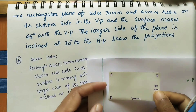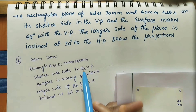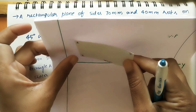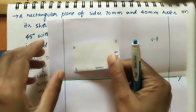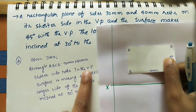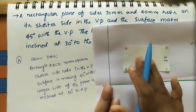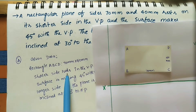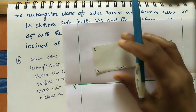Before drawing any plane, take this sentence: the shorter side rests in the VP. The plane has two shorter sides; we can take either one and place it in the vertical plane. The shortcut is: keep the entire plane in the VP, starting from the shorter side, for this first assumption.